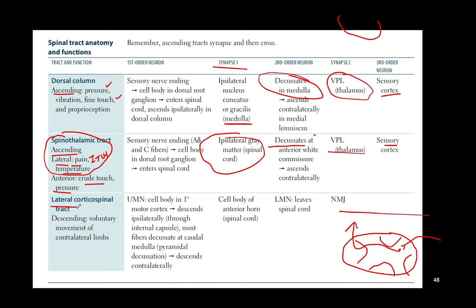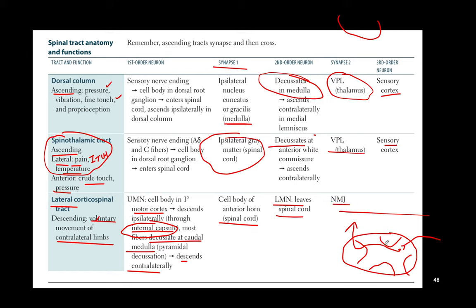The lateral corticospinal tract controls voluntary movement of the contralateral limbs. The primary upper motor neuron descends through the internal capsule — where we have lenticulostriate arteries and Charcot-Bouchard aneurysms and lacunar strokes. These fibers decussate at the caudal medulla and descend contralaterally. A lesion of the upper motor neuron above the medulla will be contralateral; below the medulla it will be ipsilateral. Lower motor neurons synapse at the anterior horn cell body and then leave to the neuromuscular junction.